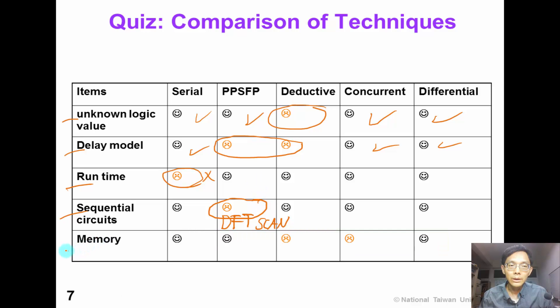And finally, about memory requirement, we know that deductive fault simulation and concurrent fault simulation cannot predict the memory required, so they have memory problems.